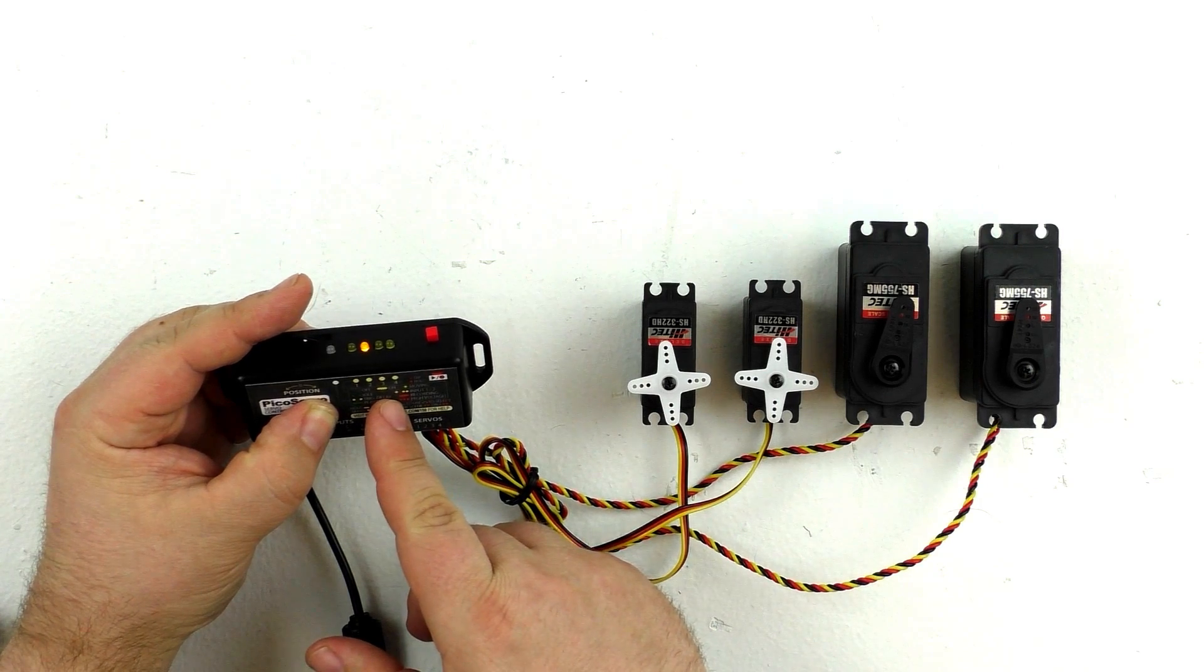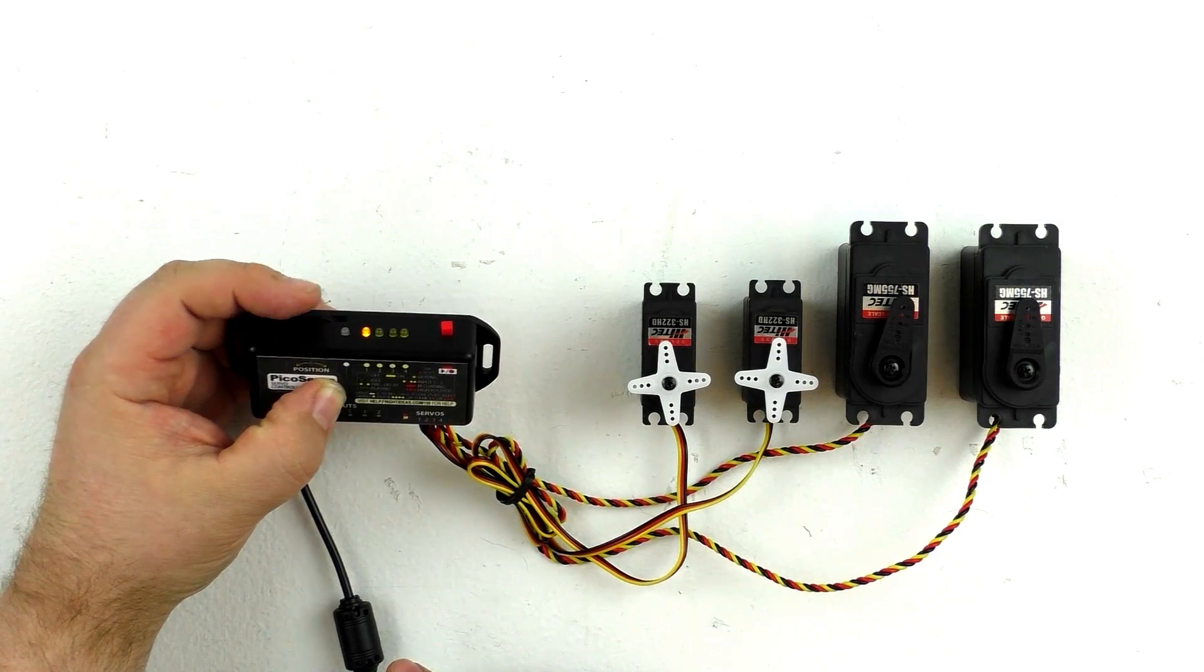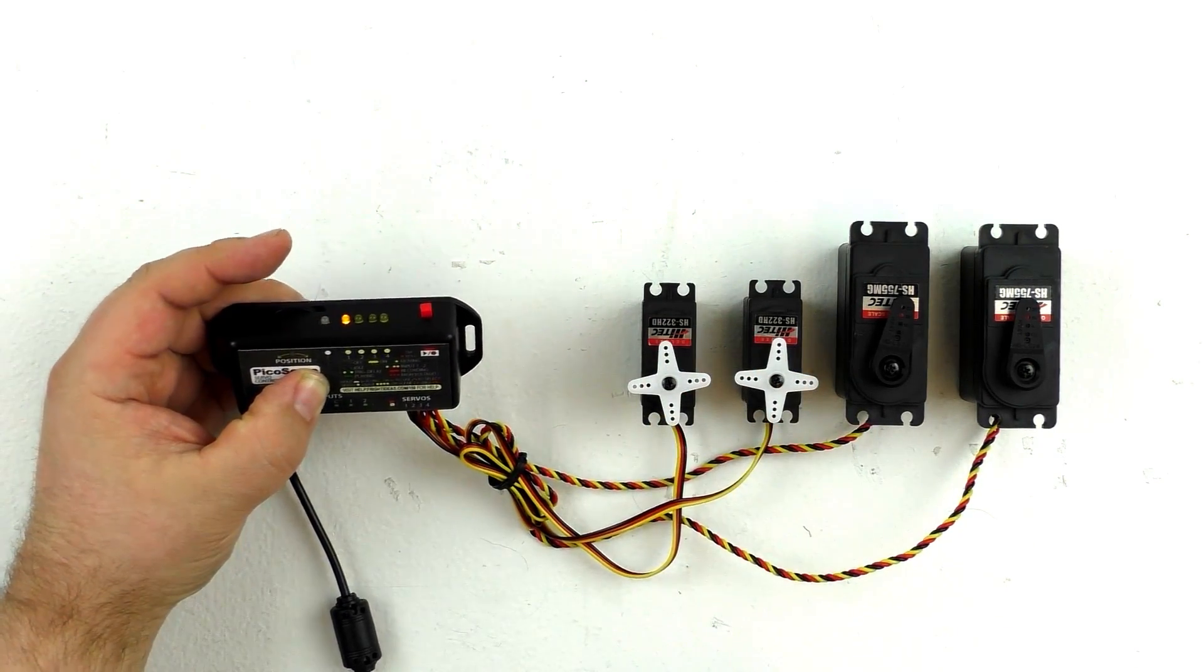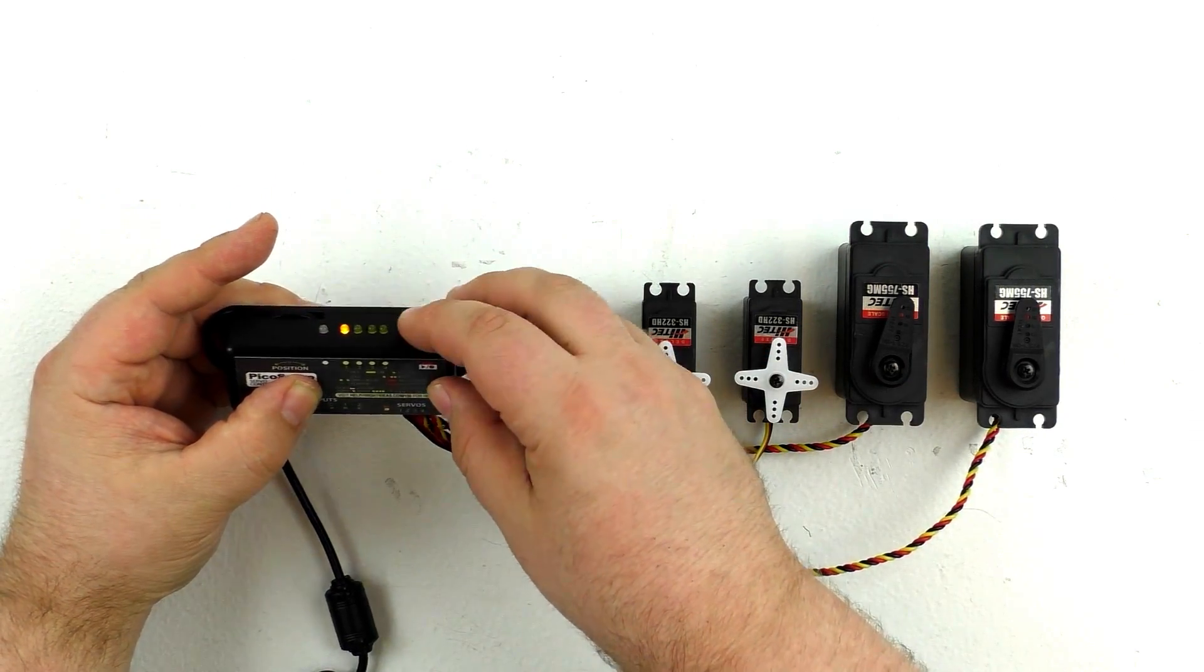Now it will let us choose the output mode for that servo output. We're going to set that to number one, that's the normal mode. There are a couple other modes that you can use if you have preferences on how your servos operate. We're just going to leave it at one.